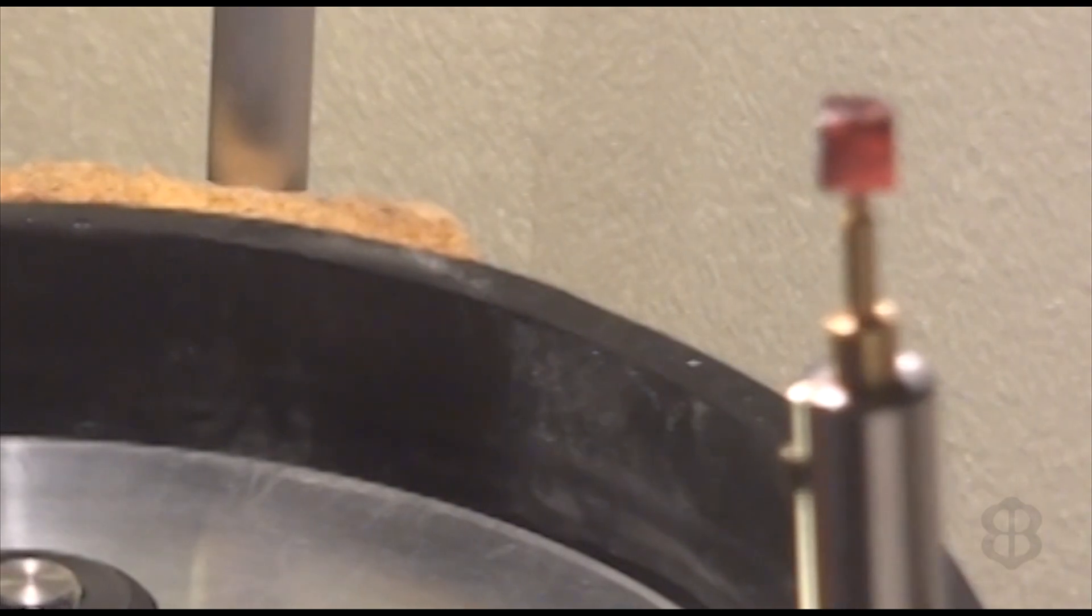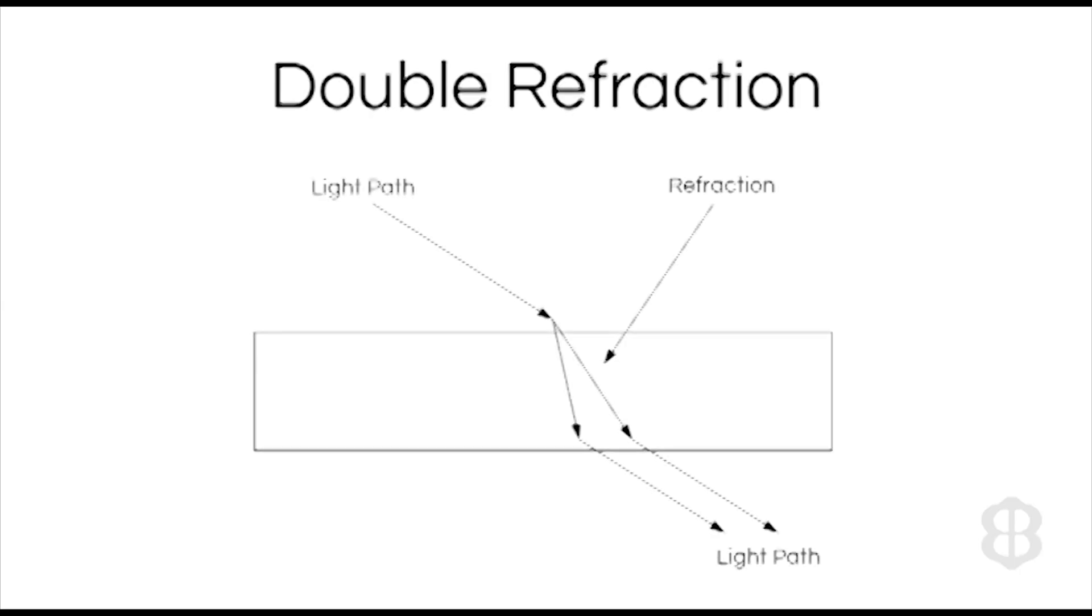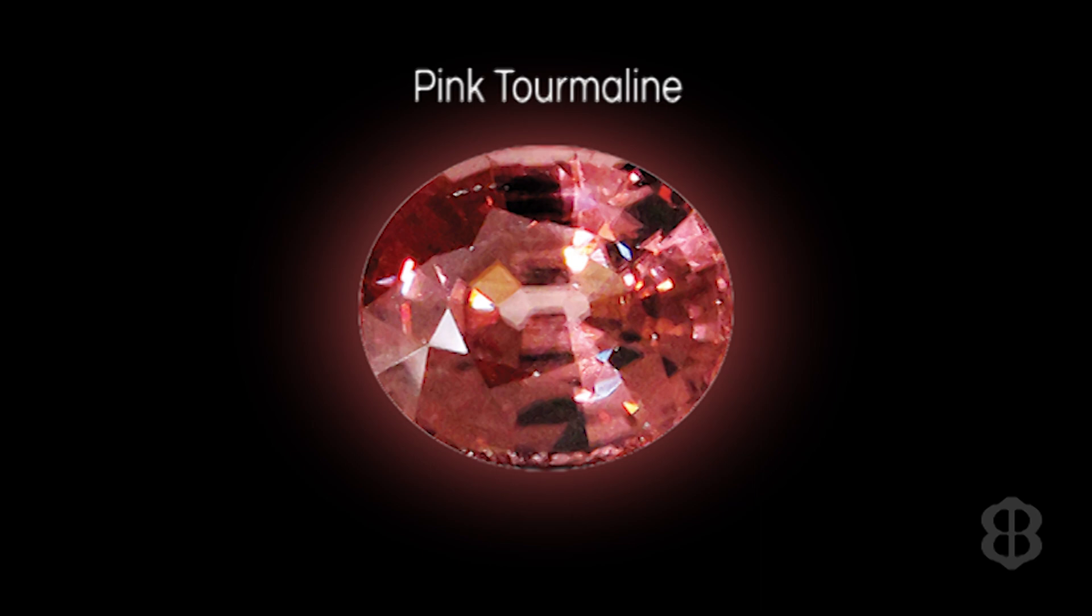The other consideration of zircon is that it's a double refractive stone. With this double refraction or birefringence you're actually looking at only one facet line but because of how the light is being bent in the stone your eye sees two lines that can look a little bit blurry inside.